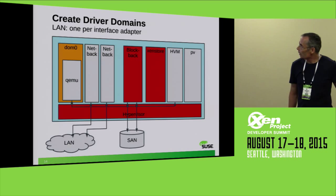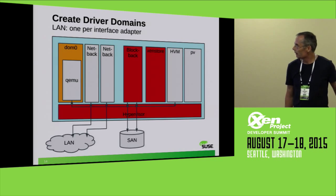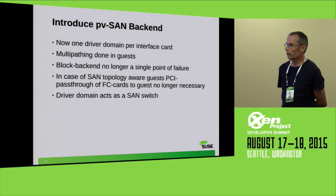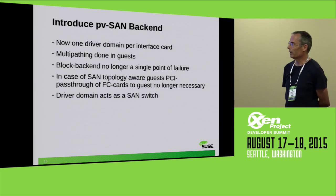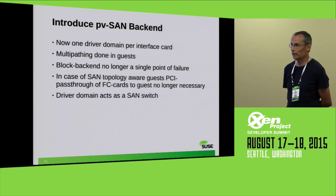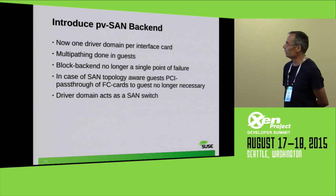We can do a bit more for the block backend by introducing a new type of paravirtual backend: a paravirtual SAN backend. If it works for LAN and acts as a LAN switch, we should be able to do the same for SAN, building a software SAN switch. It's more or less the same technology but with another protocol.